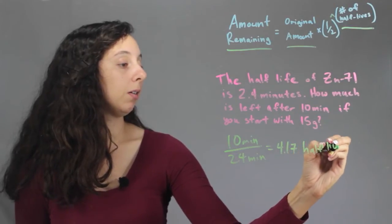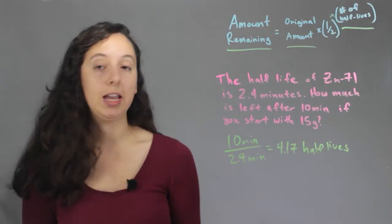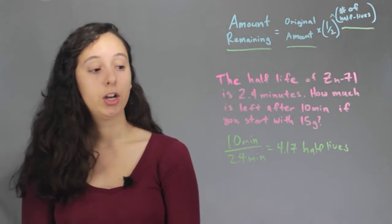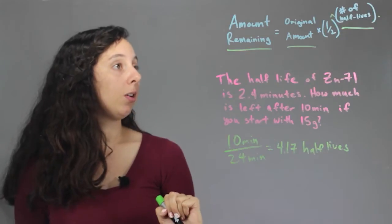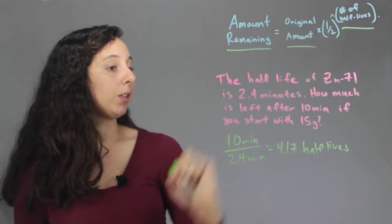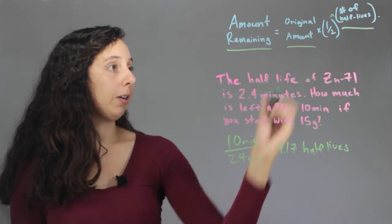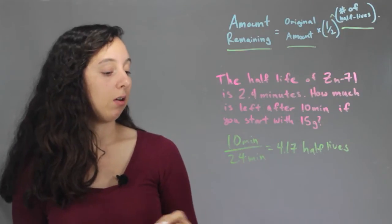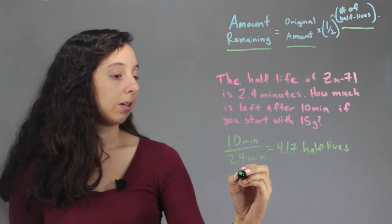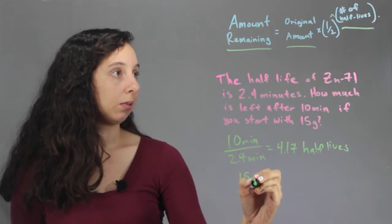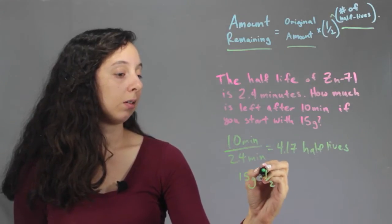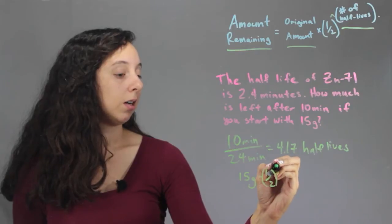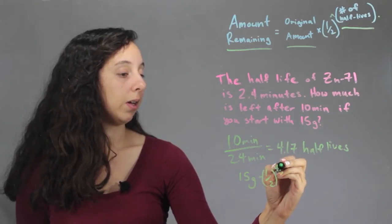So remember, it doesn't have to be an integer, it's okay that we have 4.17. So now, we have our number to plug into here, and we're already given the original amount, that's 15 grams, and so we're ready to find out how much is left. So, our equation will look like 15 grams times one-half to the power of 4.17.